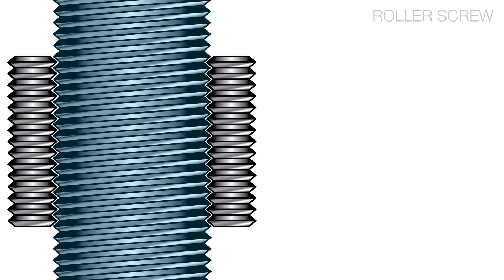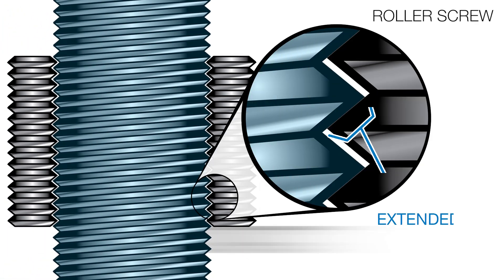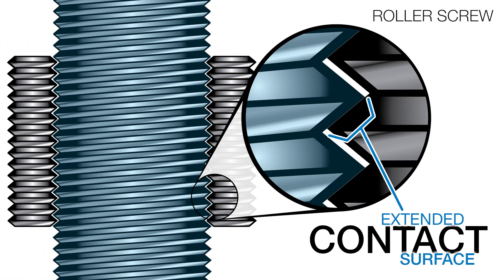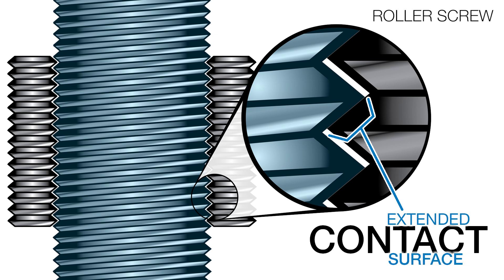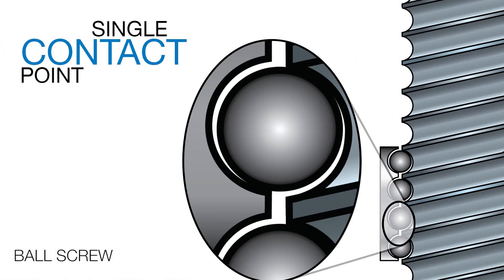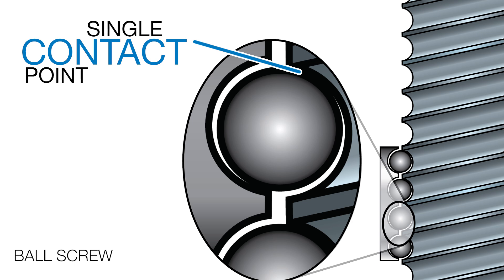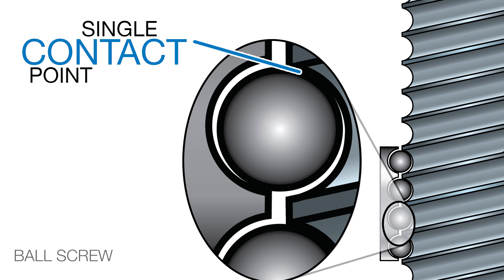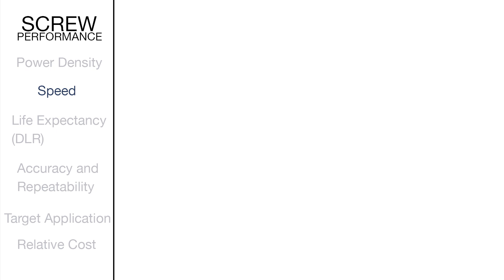With more contact points and increased contact surface area, roller screws distribute the load more effectively than ball screws. By contrast, ball screws of similar size have lower contact surface area, which decreases force capability and life, but increases efficiency for high speed applications.